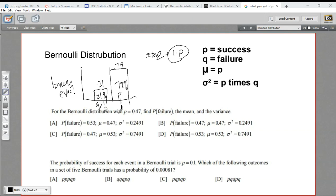So let's try a couple of problems here. The first one says, for the Bernoulli distribution with a p of 0.47, so the success rate is 0.47, find the probability of the failure, the mean, and the variance.